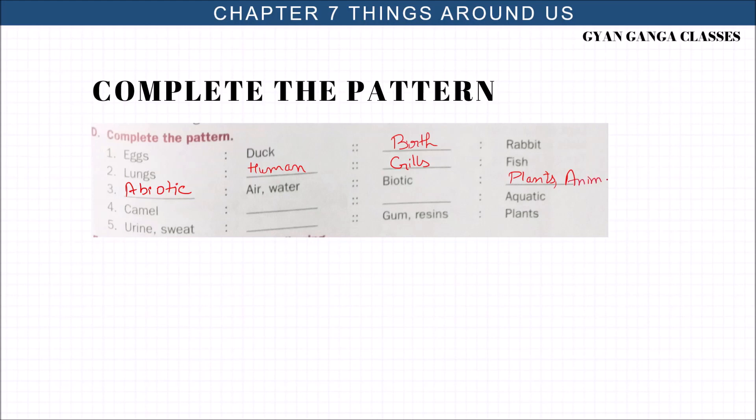Camel - what is its habitat? It is terrestrial. And aquatic is fish. Urine and sweat are animal excretion. Gum and resins are plant excretion. Clear? Let's move on.